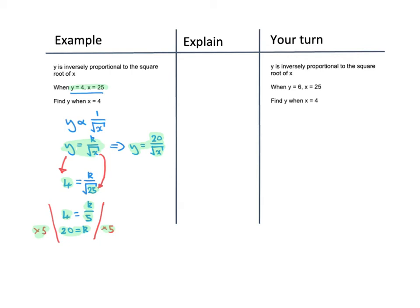We've been asked, once we've done this, if X is 4, what is Y? We now write down the formula that we've generated: Y equals 20 over the square root of X. We substitute in the value of X, which is 4. The square root of 4 is 2, so this is 10, and that's the value we're looking for. When X is 4, Y is 10.